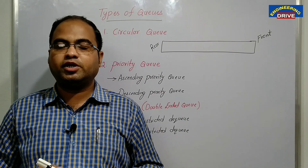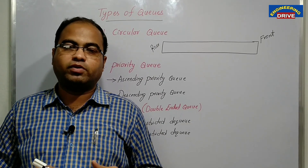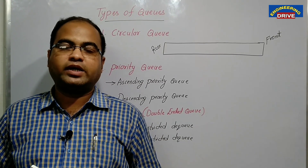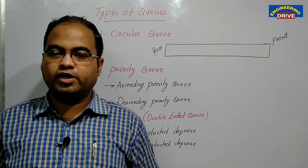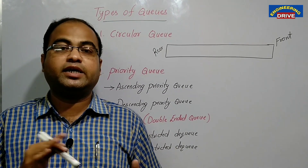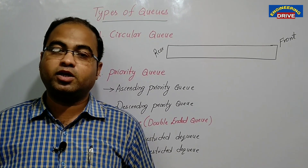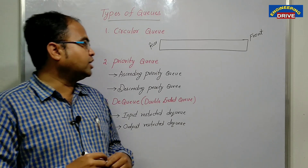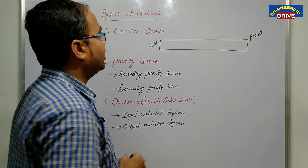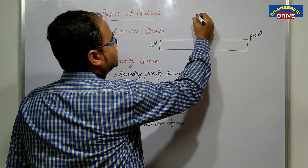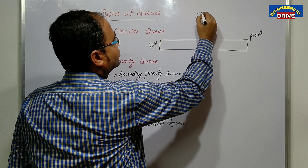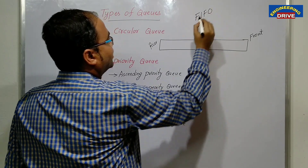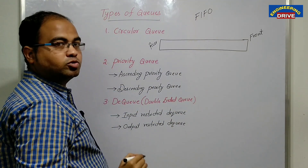In my previous video, I already told you about the working of a queue — what is a queue, how the data will be stored in a queue, and how the data is deleted from the queue. As we know, the another name of queue is FIFO structure, that is first in first out structure.